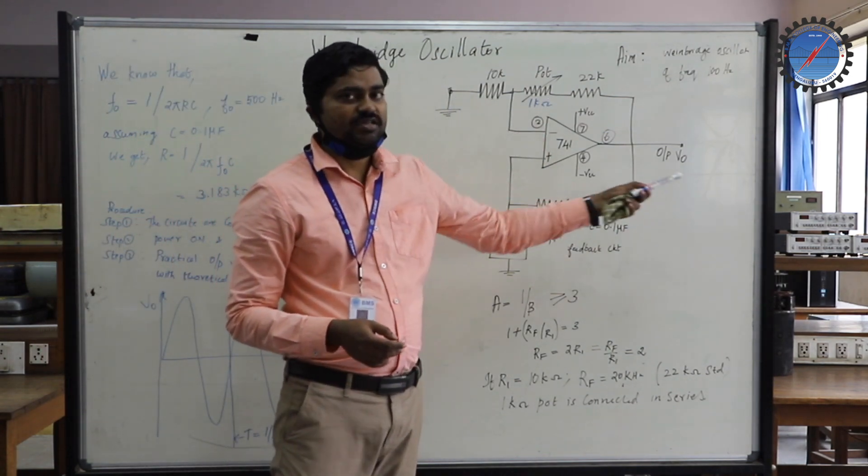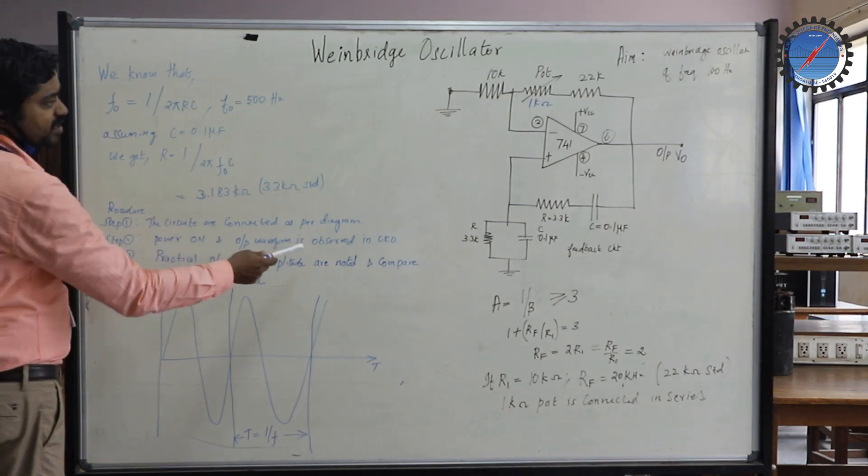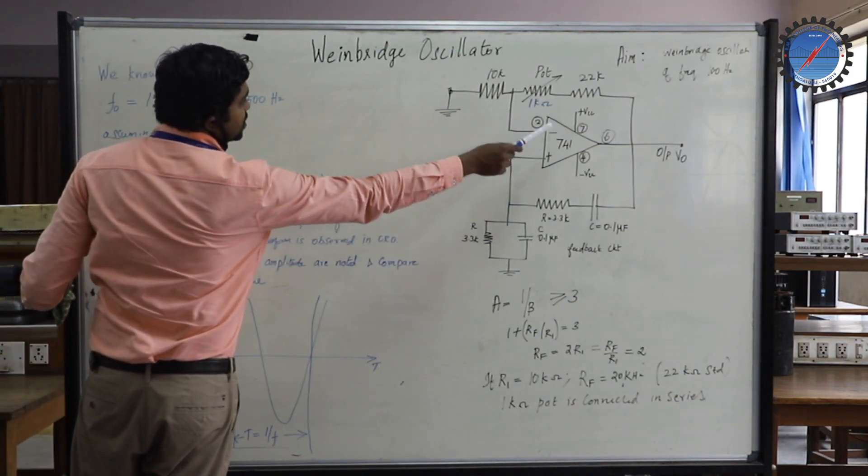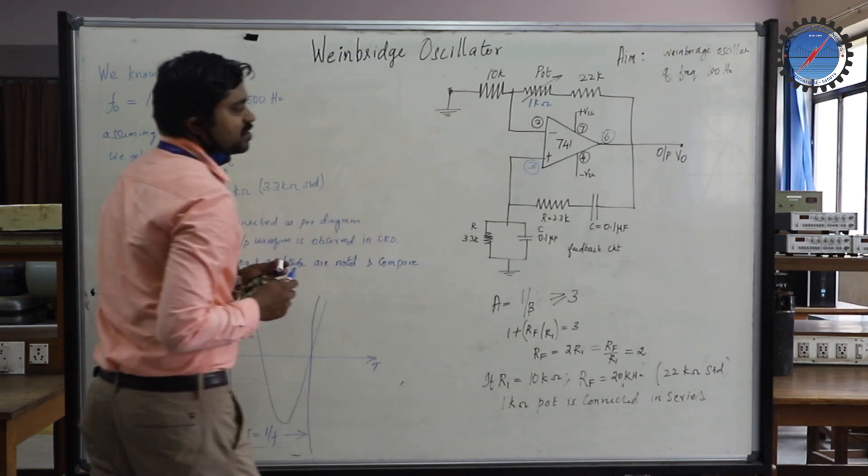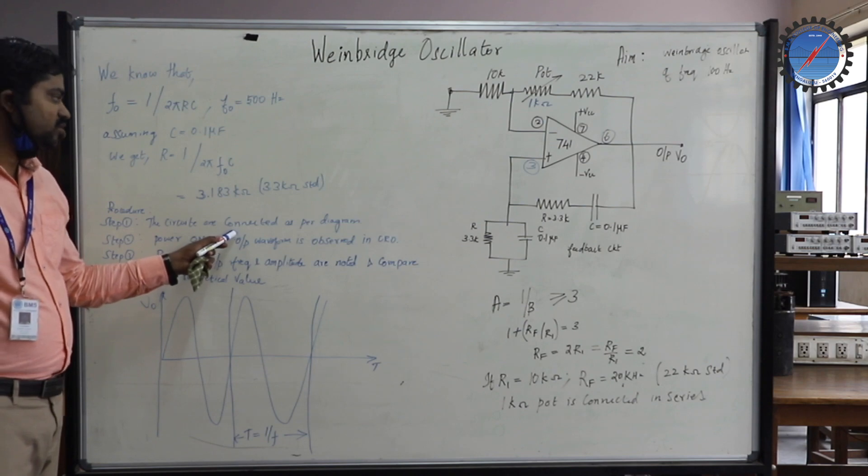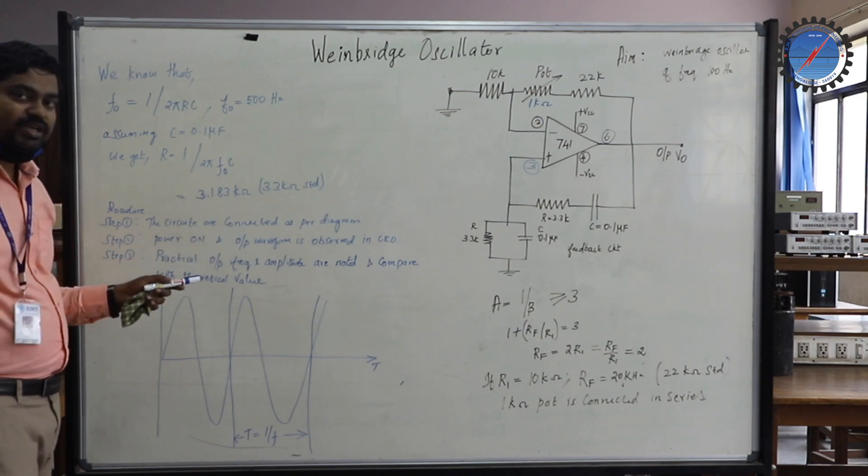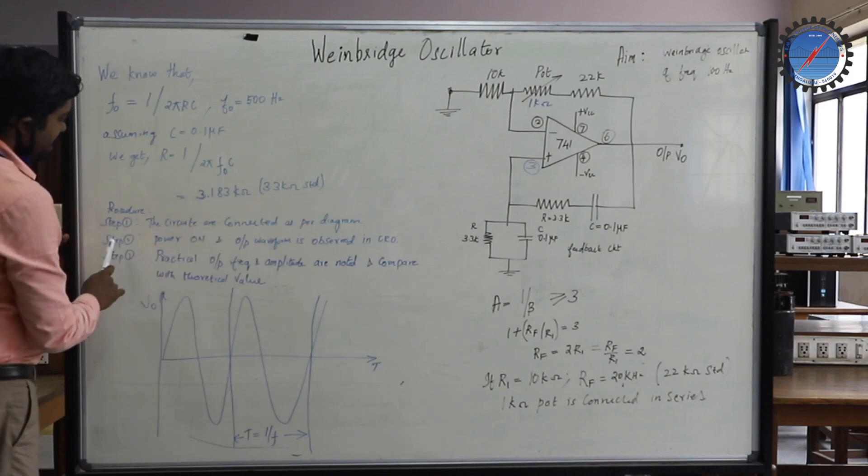When you vary the potentiometer, the signal gets oscillated. That's what Wien bridge oscillator does. For the procedure, step 1: the circuits are connected as per the diagram, as per the pin numbers. As per the pin diagram, you can connect the hardware on your springboard. The components can be obtained and connected as per the figure.